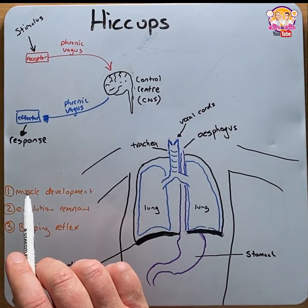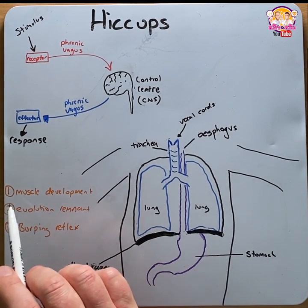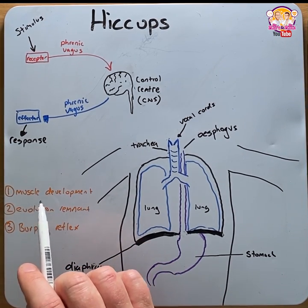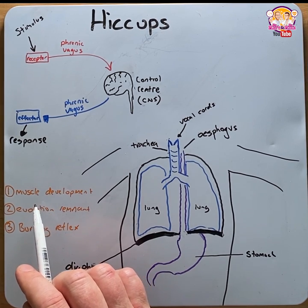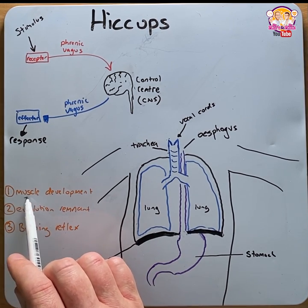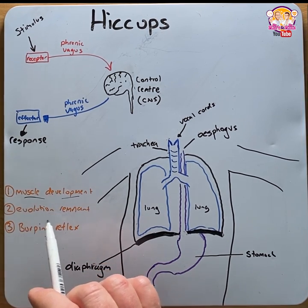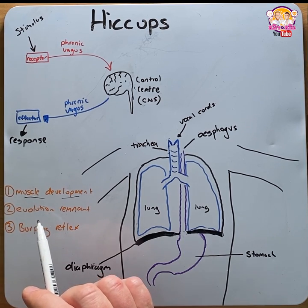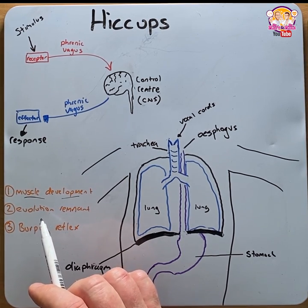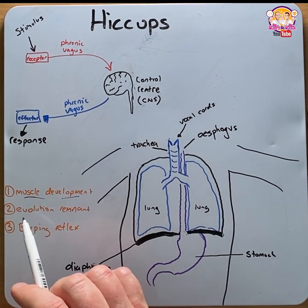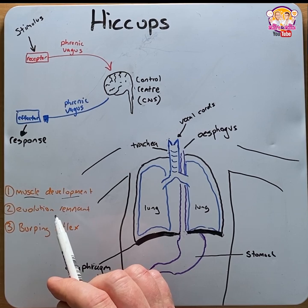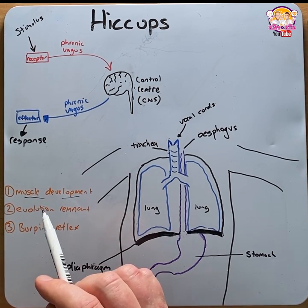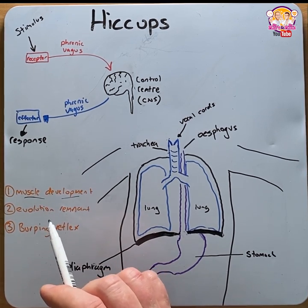There are a few theories behind why we have hiccups. Number one: because hiccups occur in the foetus in utero, it's a way of developing respiratory muscles. Number two: it's an evolutionary remnant of when our aquatic ancestors had both gills and lungs, and the hiccup reflex was designed to oxygenate the gills with water but not to fill up the lungs.